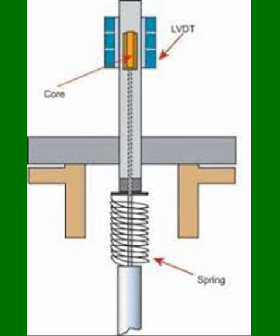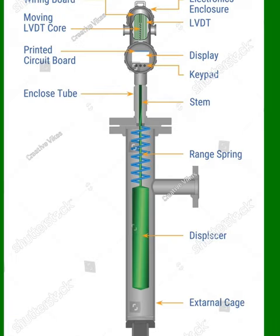But what about the spring? This is where it gets interesting. The spring mechanism opposes the upward force exerted by buoyancy. As the liquid level changes, the buoyant force does too, causing the displacer to move up or down. This movement doesn't go unnoticed — a position transmitter steps in, converting the movement of the displacer into a proportional electrical signal.